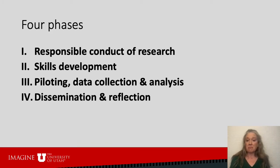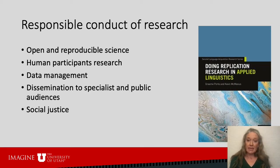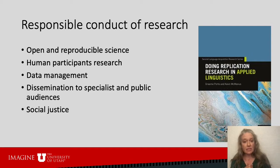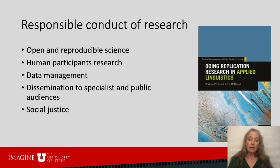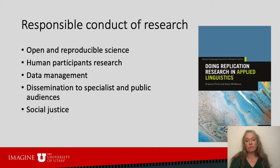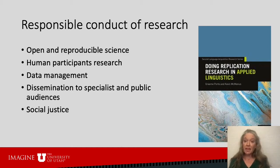We can think about the structure of the course in about four phases. The first is a phase on responsible conduct of research. We begin the class with an exploration of the arguments for and against open and reproducible science, considering sources from both within our field and outside it. We use a book called Doing Replication Research in Applied Linguistics by Porta McManus, which provides a great introduction to the philosophical underpinnings of reproducibility, and we also consider work published in popular media. For many students this is the first time they've been exposed to responsible conduct of research issues.